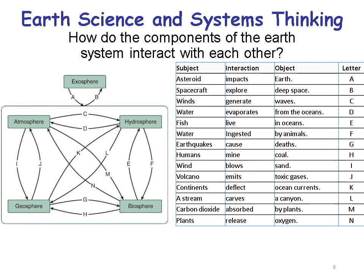In M, plants absorb carbon dioxide gas — the atmosphere interacts with the biosphere. In N, plants release oxygen — the biosphere interacts with the atmosphere.